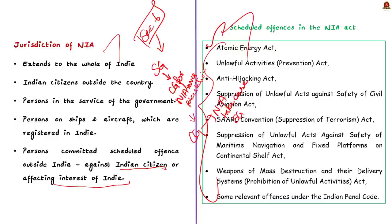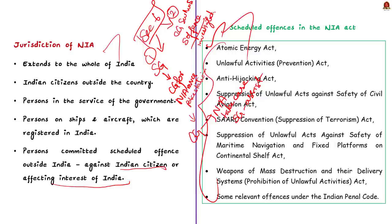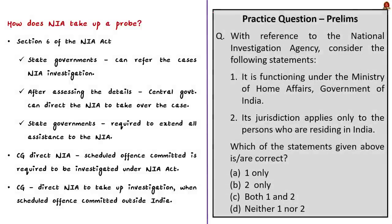The central government may also suo motu direct the NIA to take up a probe when it is of the opinion that a scheduled offense has been committed and investigation under the NIA Act is required. In this discussion we saw in detail about the NIA — its jurisdictions and how it takes up a probe. Make note of the jurisdictions as there may be preliminary exam questions on them.